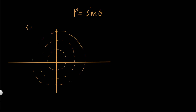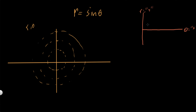This is the r-theta plane. In the last video we plugged in points, got outputs for the radius, noticed symmetry, and graphed it — but we can do this in a much quicker way by graphing the sine function with respect to its radius. Here the radius is our y-axis and theta is our x-axis, and graphing this lets us see how the sine function behaves, which makes graphing in the polar coordinate system much easier.